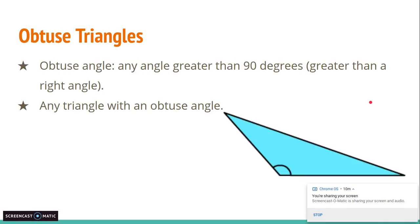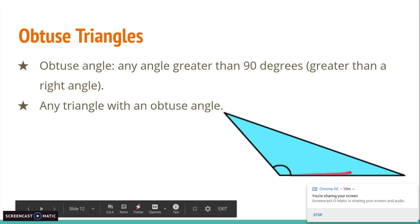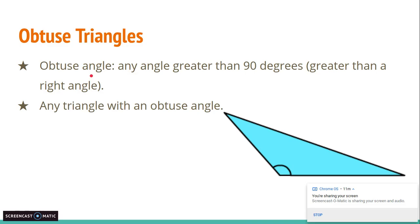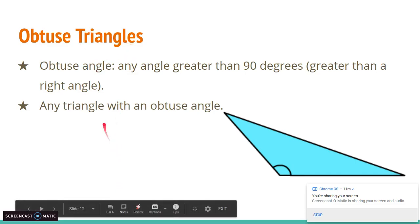Our final triangle is an obtuse triangle. An obtuse angle is any angle that is greater than 90 degrees — the same as saying greater than a right angle. In this triangle you can see an obtuse angle, since a 90-degree angle would be formed by going straight up, and this angle is bigger than that. An obtuse triangle is any triangle with an obtuse angle — so if you have one angle more than 90 degrees, you have an obtuse triangle.